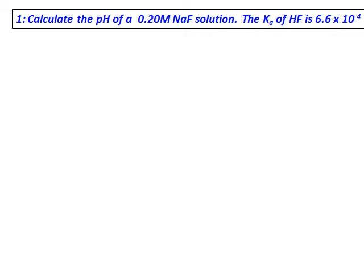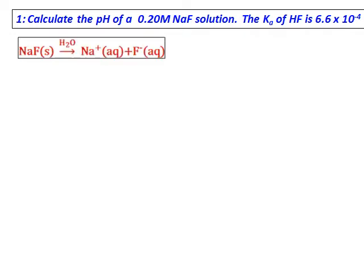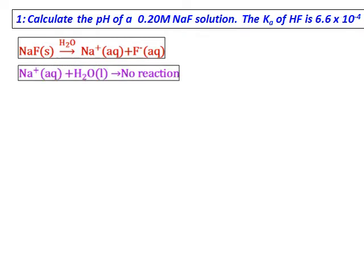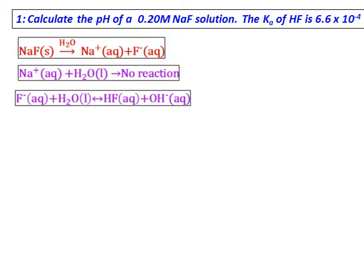Calculate the pH of a 0.20 molar sodium fluoride solution. The Ka of HF is given. This is the salt of a strong base and a weak acid. Writing the reaction with water gives sodium ions and fluoride ions. Sodium ions do not react with water. The fluoride ions react with water to give hydroxide ions.